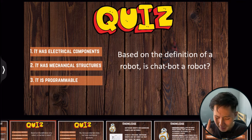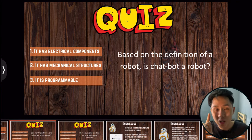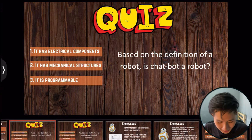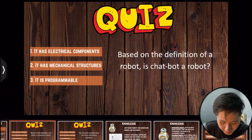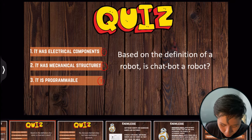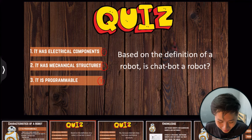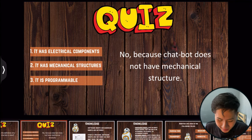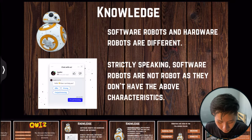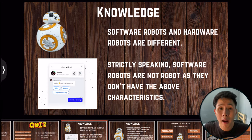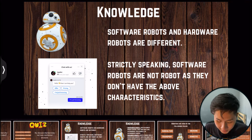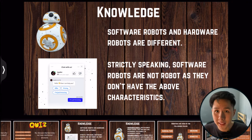Here's a quiz: is a chatbot a robot? The three characteristics of a robot are electrical components, mechanical structure, and programmability. The answer is no — a chatbot does not have any mechanical structure. Chatbots are known as software robots, which are different from hardware robots in that they have no machinery. Software robots are not considered robots because they don't meet the above characteristics.